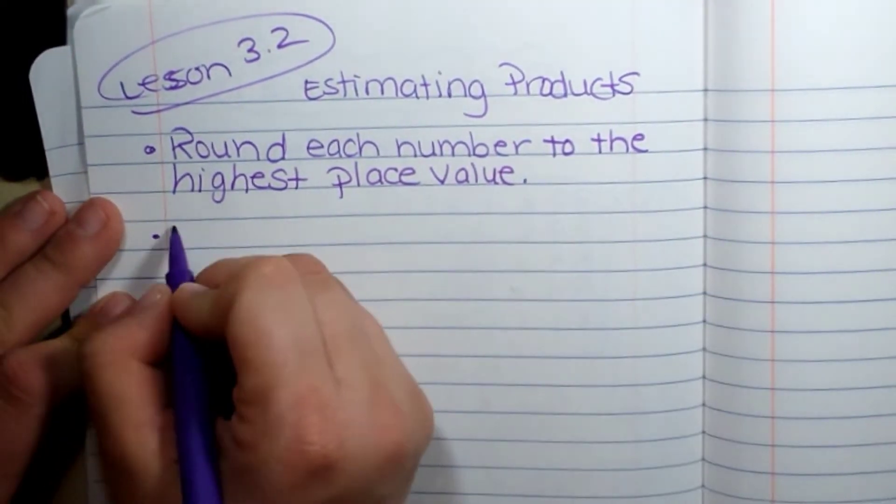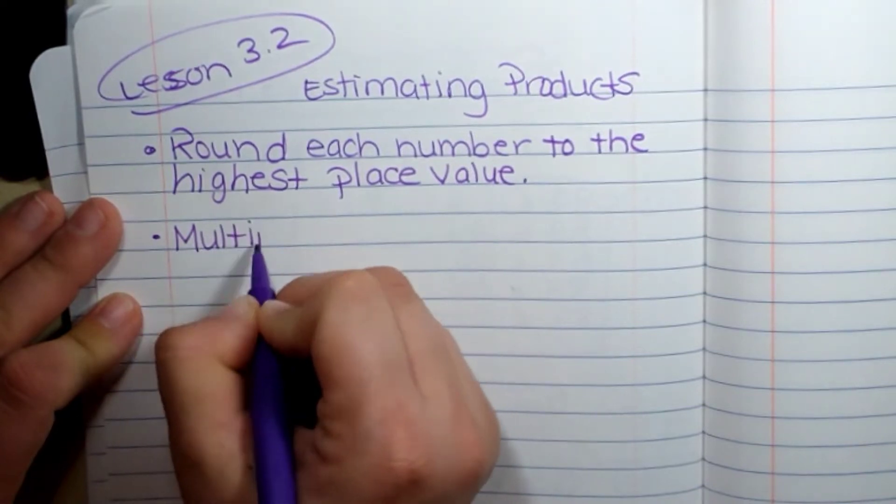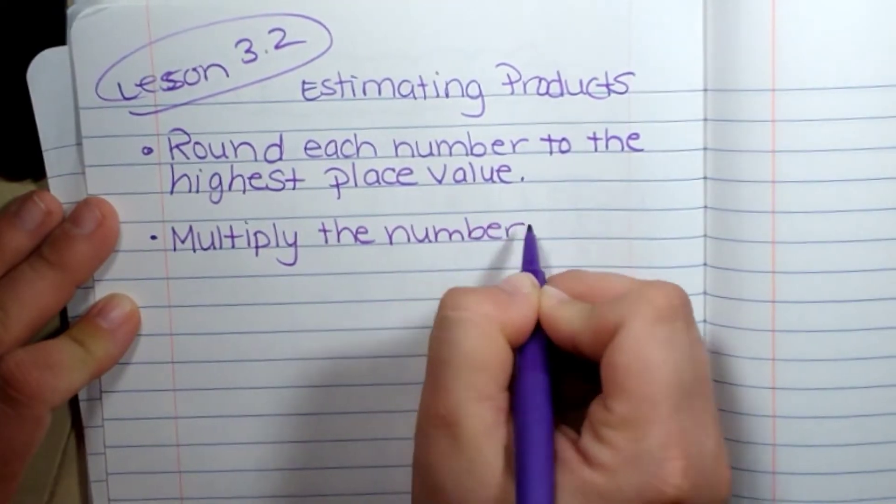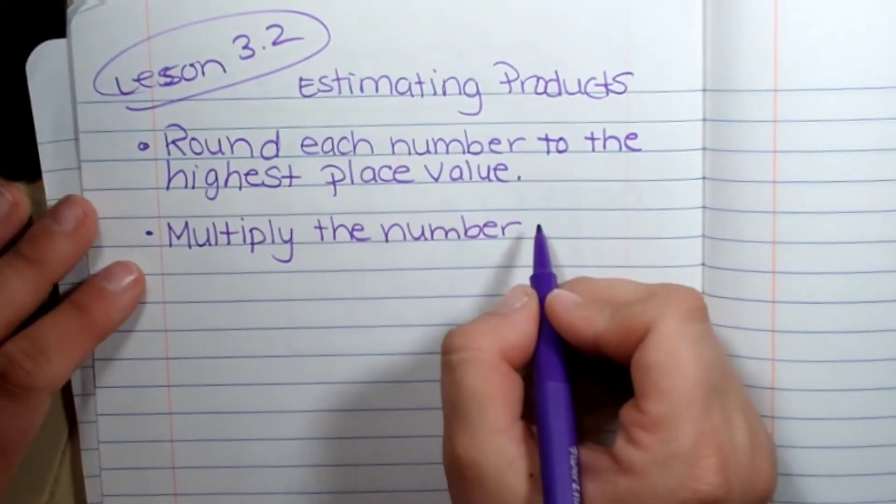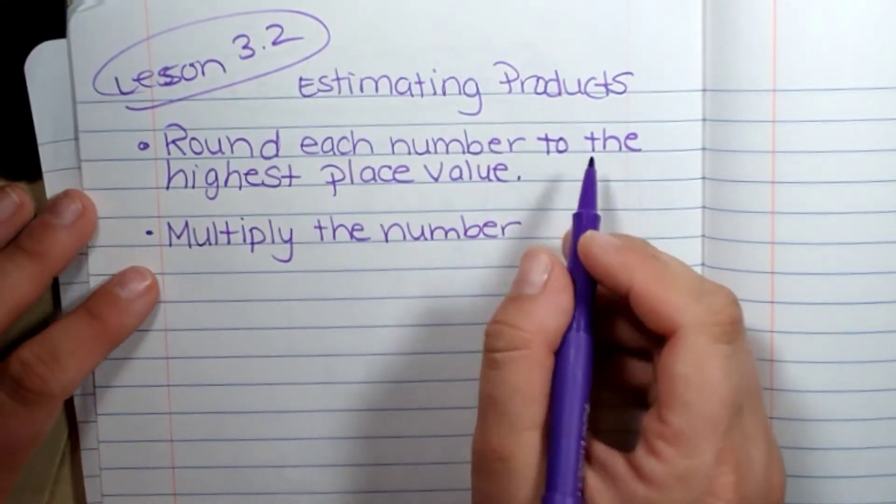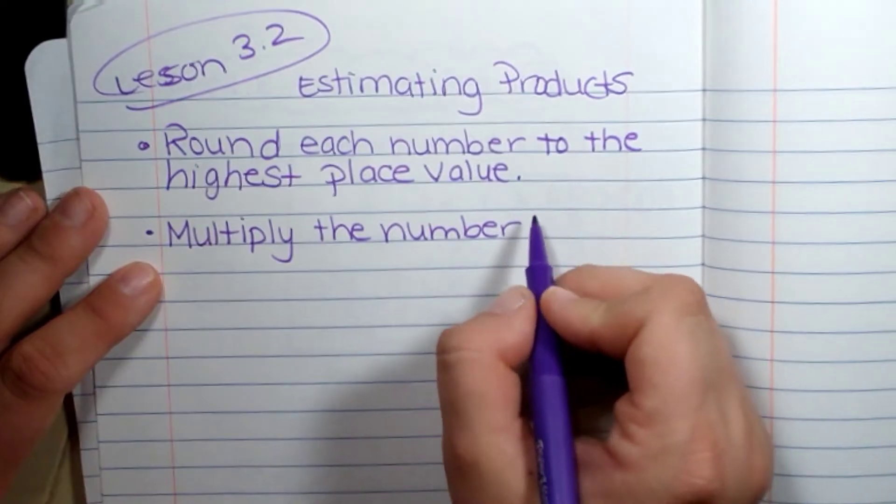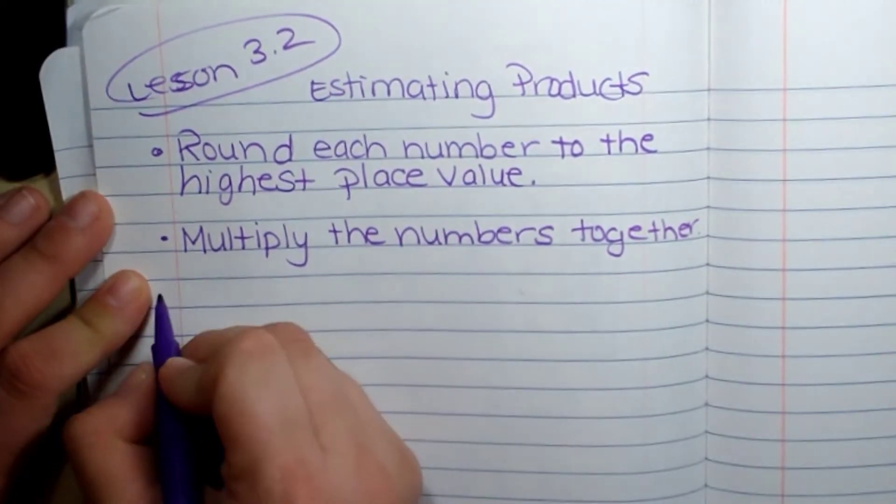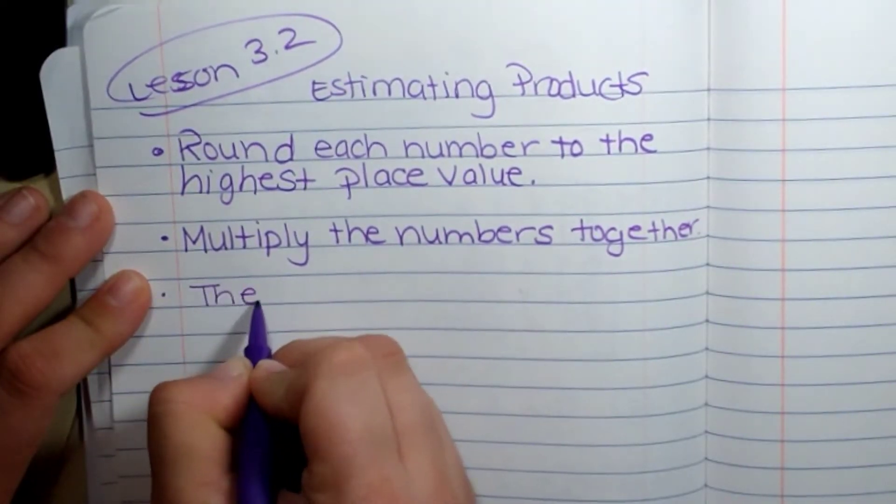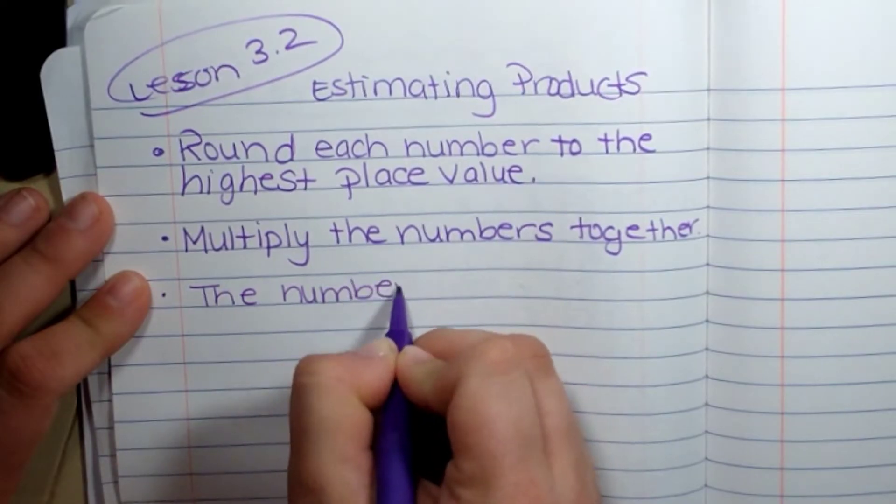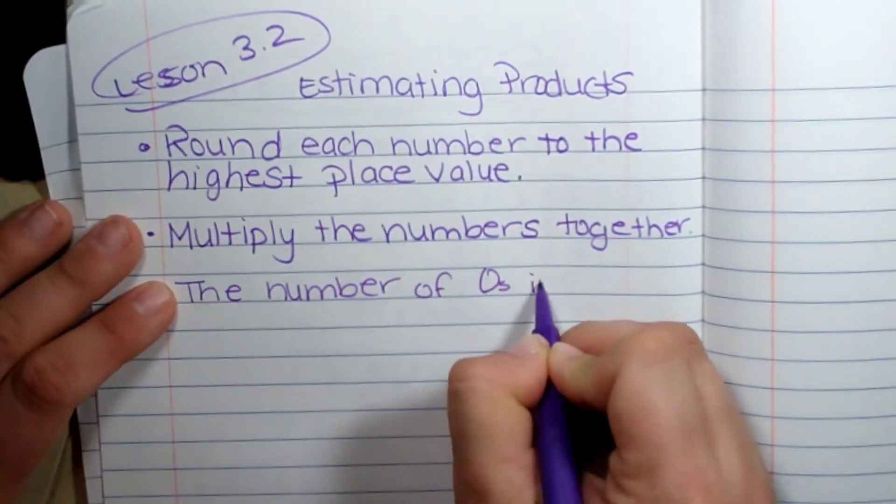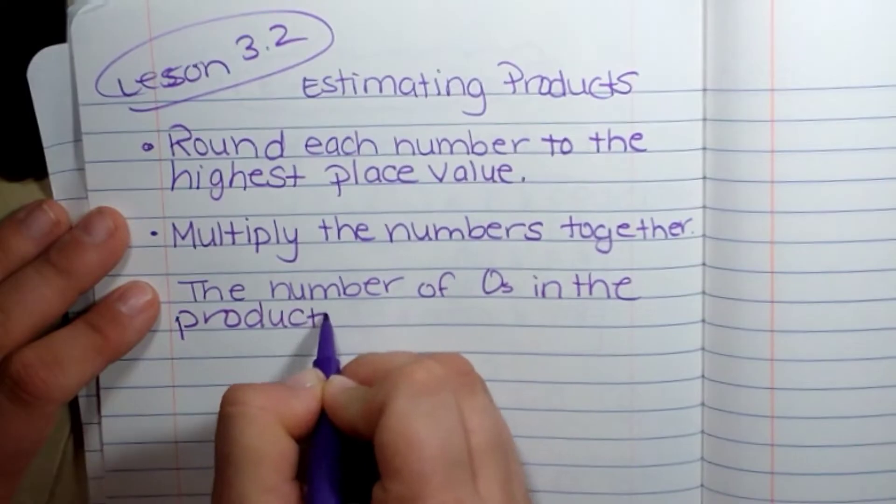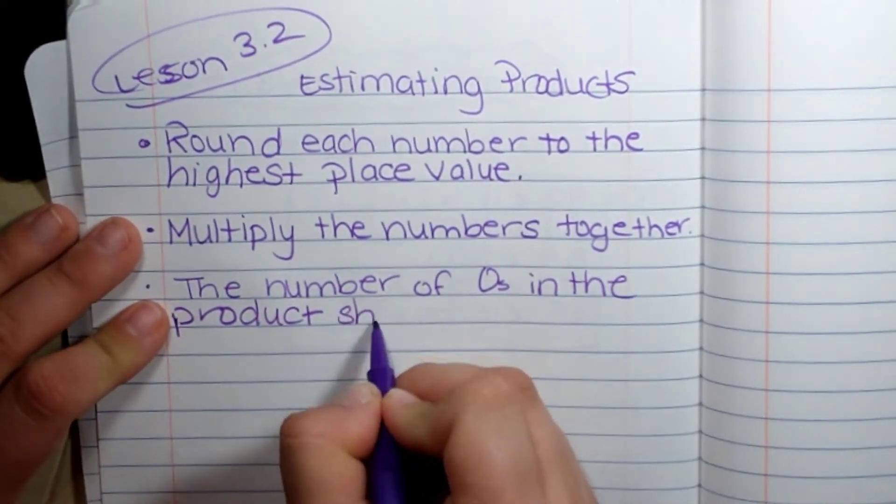Then you're going to multiply the numbers together, which shouldn't be too hard because they will have a bunch of zeros, and so we won't have to go through all of the multiplication process. That's why we do that. The number of zeros in the product—remember, the answer—should be the number of zeros in both of the factors together. So I'm going to show you what this means.